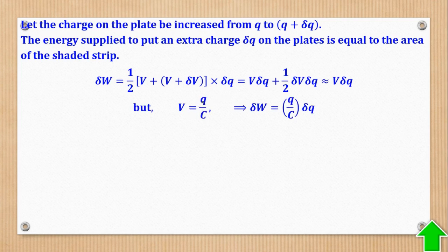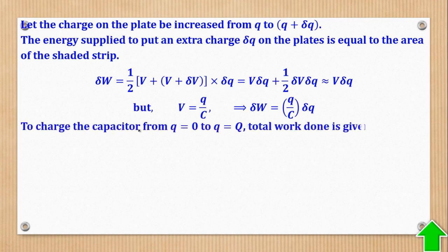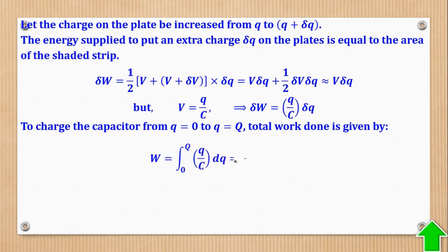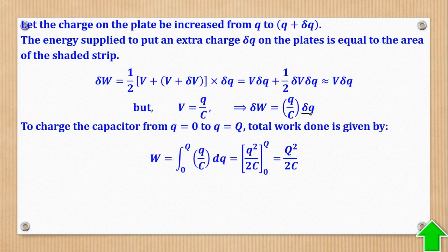We already know that V equals Q over C. So substituting, wherever there is V we put Q over C, and there is also the small change in Q, so it remains. That gives us the small work done as Q over C times small change in Q. For the total work done — to charge the capacitor from zero charge up to a charge of Q — we use integration. We integrate from 0 to Q of the small work done expression. The small change in Q becomes dQ, meaning we integrate with respect to Q.